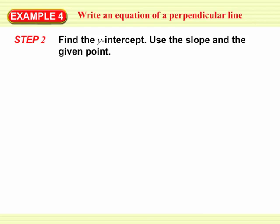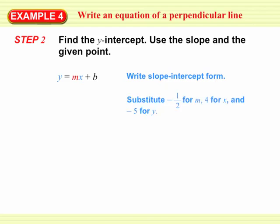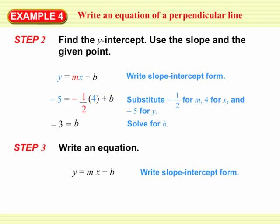Next we need to find the y-intercept. We use the slope of negative 1 half and the point 4 comma negative 5. We plug in negative 1 half for m, 4 for x, and negative 5 for y, then solve for b — we get b equals negative 3. So the equation of the new line is y equals negative 1 half x minus 3. If graphed, it would be perpendicular to the given line and pass through the point 4 comma negative 5.